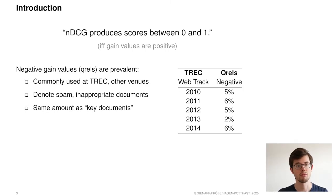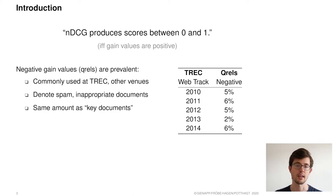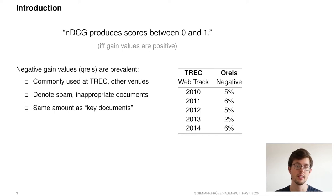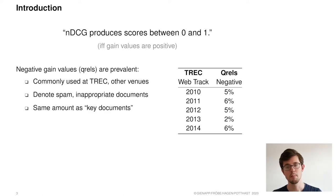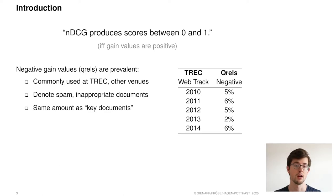But here lies a problem: negative labels are prevalent. They are commonly used at track and other shared tasks to mark spam, inappropriate documents, or otherwise irrelevant content. As you can see in the table to the right, negative labels appear at about the same rate as key documents, between 2 and 6 percent. Therefore, the impact negative relevance judgments have on evaluation results cannot be neglected.